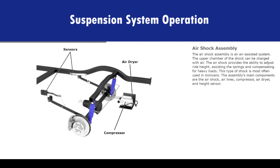The air shock assembly is an air-assisted system. The upper chamber of the shock can be charged with air. The air shock provides the ability to adjust ride height, assisting the springs and compensating for heavy loads. This type of shock is most often used in minivans. The assembly's main components are the air shock, air lines, compressor, air dryer, and height sensor.